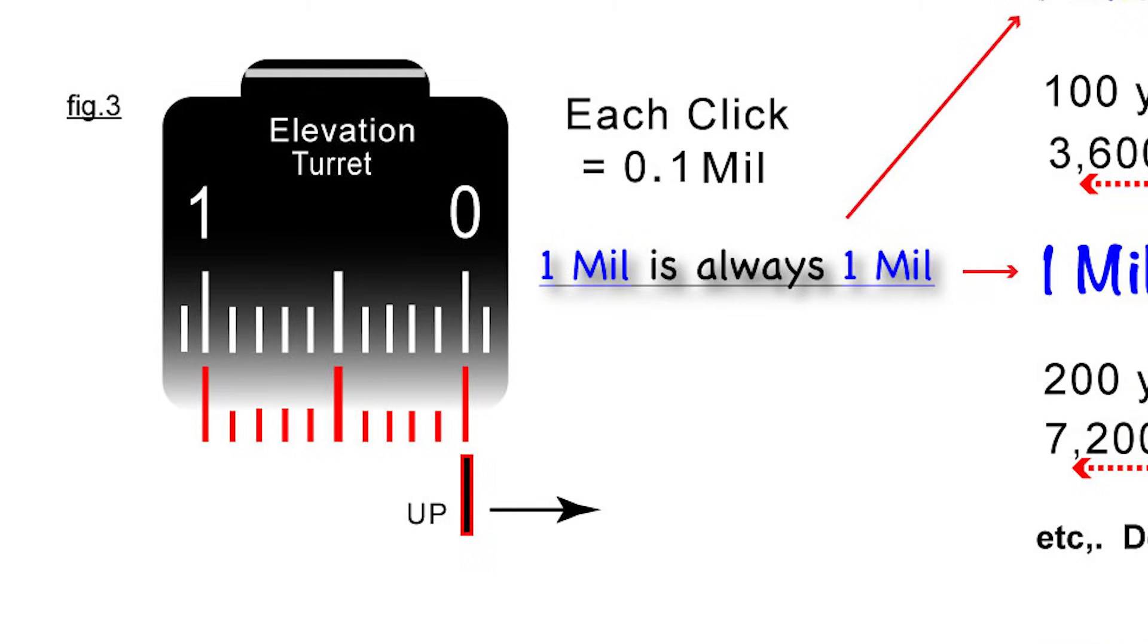In figure three here, I have a graphic representation of my elevation turret. It's showing the markings of 0 to 1 mil. And if you move your elevation turret counterclockwise, you're moving up on your elevation. So for each click, you're moving 0.1 mil. And if you go five clicks over, it's 0.5 mils. And if you go a full 10 clicks, then it's one mil completely.